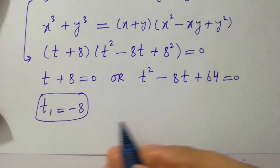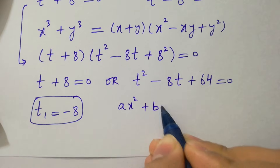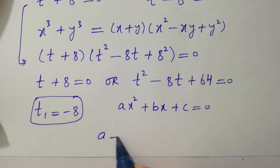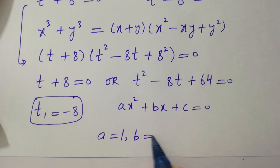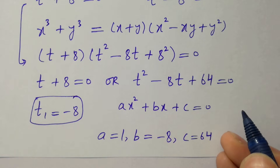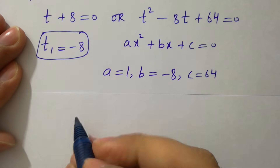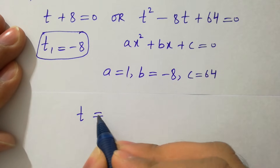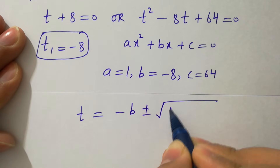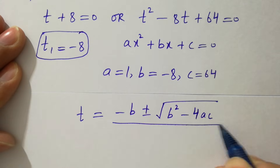Our first solution is t₁ = −8, which is a real solution. The second factor is a quadratic equation of the form ax² + bx + c = 0. By comparing, a = 1, b = −8, and c = 64. We now apply the quadratic formula: t = (−b ± √(b² − 4ac)) / 2a.